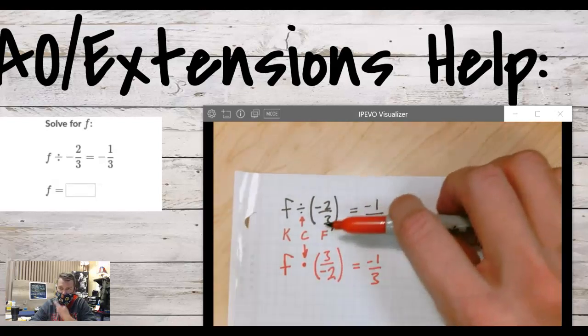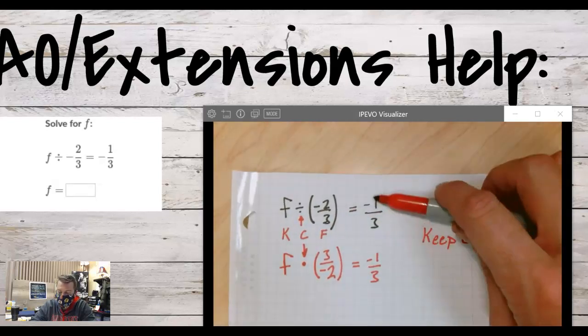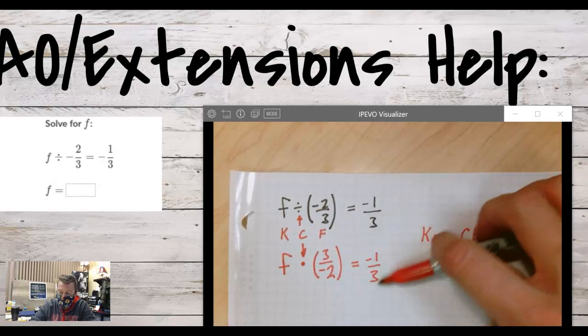Literally, we flipped it - what was on bottom went on top and vice versa. My right side stays the same, right? Negative one-third stays the same.